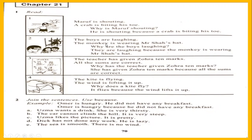The monkey is wearing Mr. Shah's head. One sentence: the boys are laughing. Why are the boys laughing? What is the reason? The monkey is wearing Mr. Shah's head. As you can see in this picture — laughing, Mr. Shah, and here is the monkey wearing Mr. Shah's head. Look how they join two sentences together by using the conjunction 'because' between them. They are laughing because the monkey is wearing Mr. Shah's head. To give the reason of something happening, we use the conjunction 'because.'